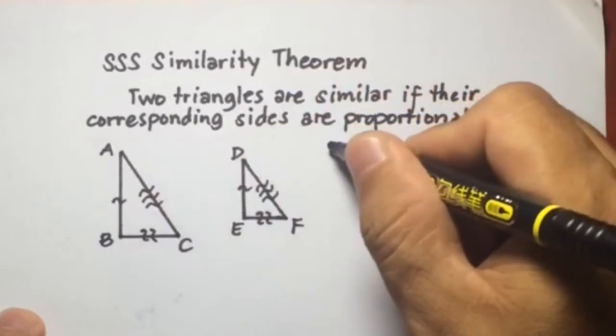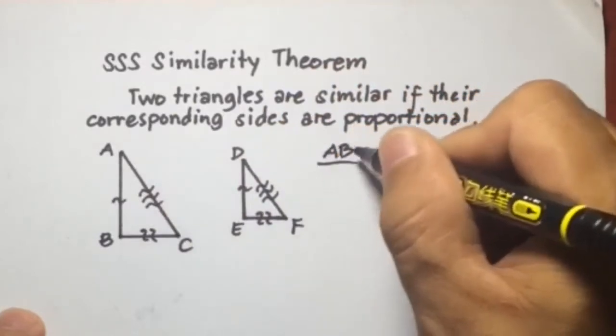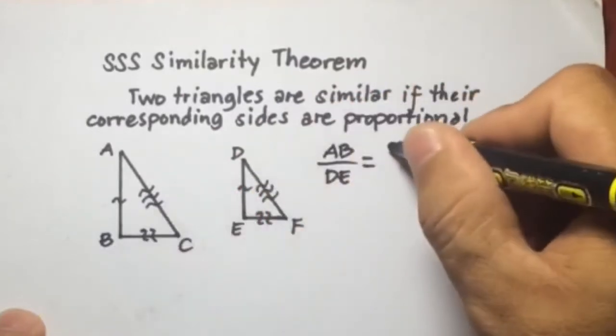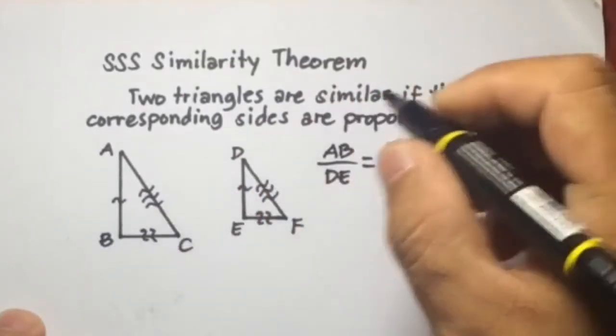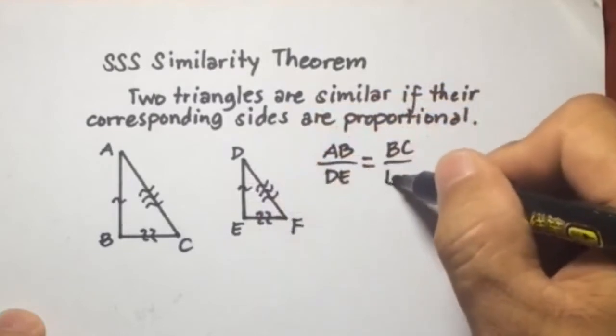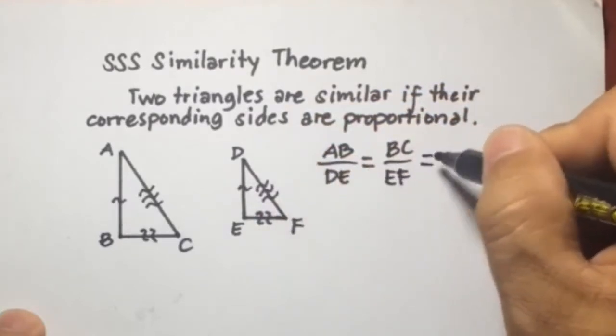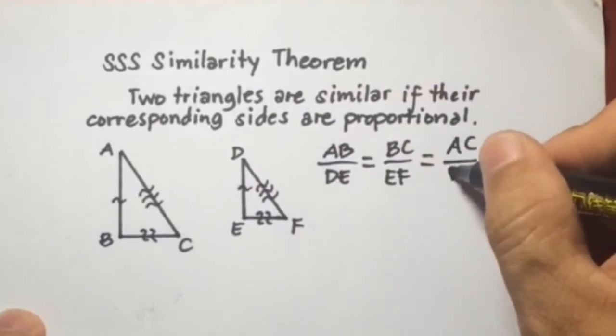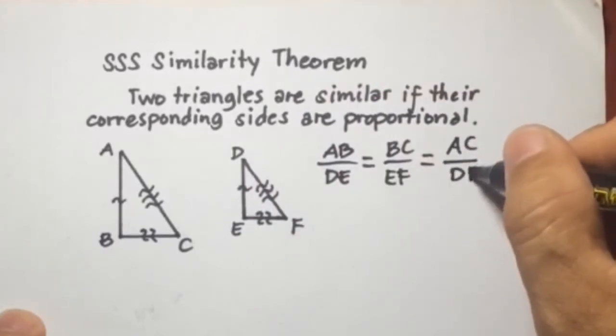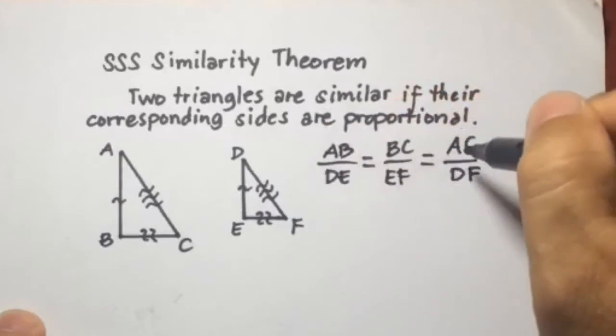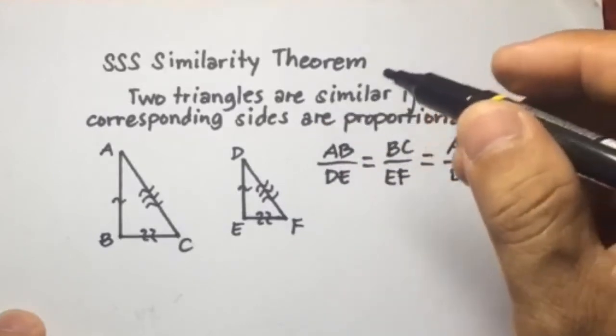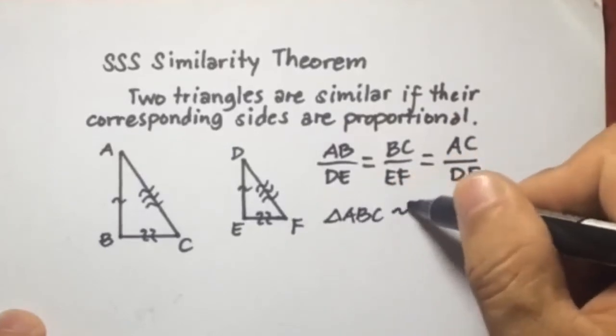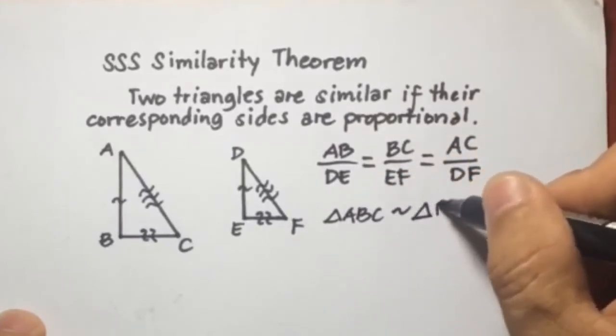This should be equal to BC over EF, and this should be equal to AC over DF. So if these three ratios are equal, then we can say that triangle ABC is similar to triangle DEF.